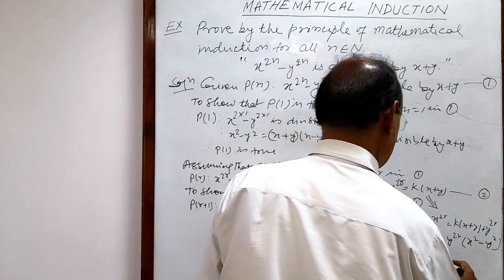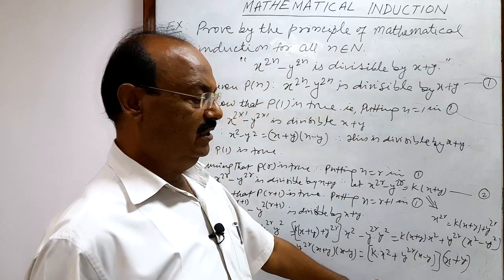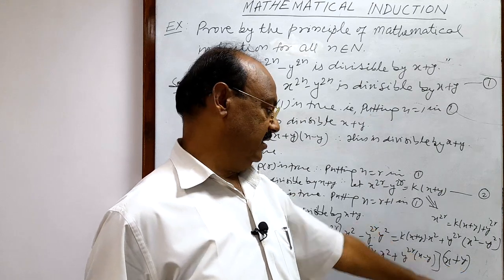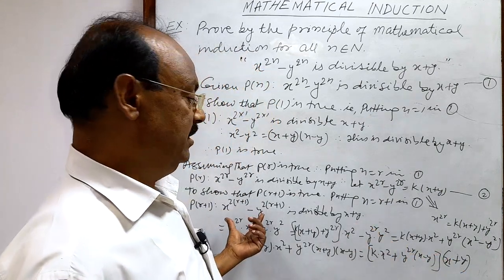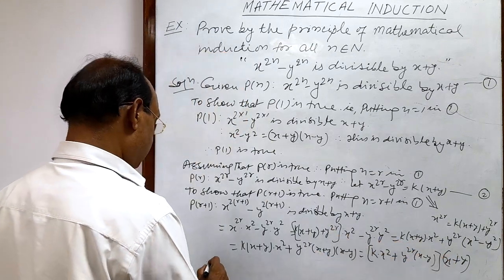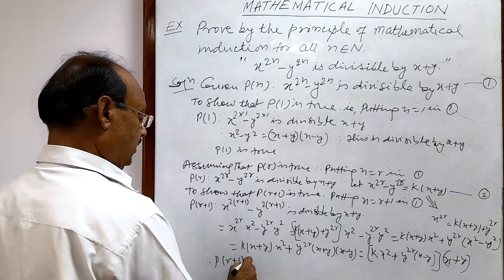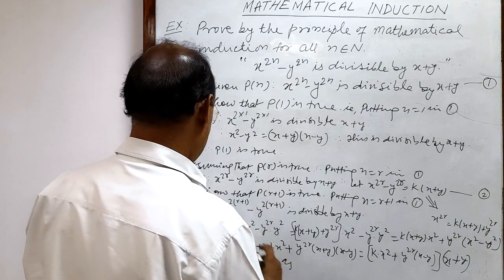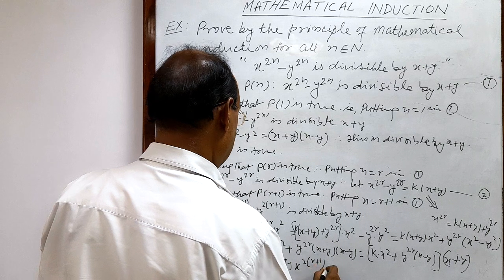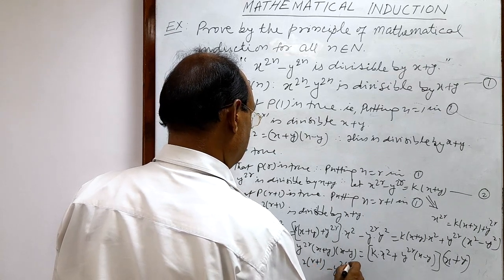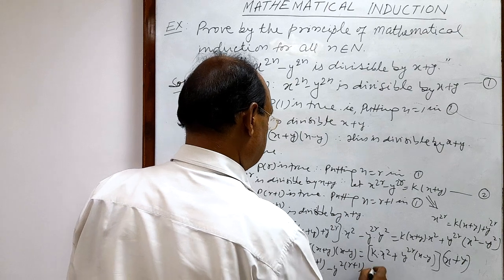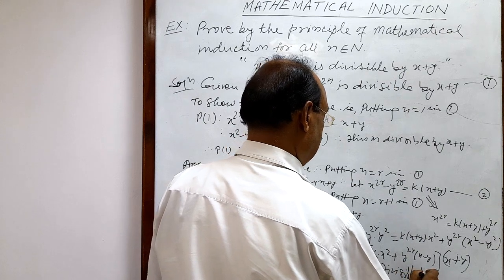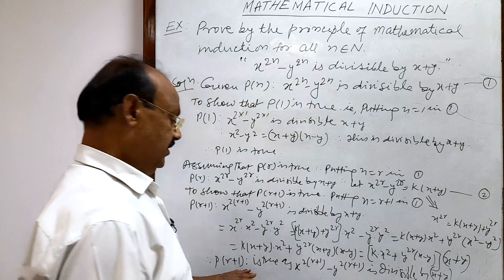We can see that this expression has x plus y as a factor in both terms. Therefore this is definitely divisible by x plus y. So P(r+1) is true, as x to the power 2(r+1) minus y to the power 2(r+1) is divisible by x plus y.